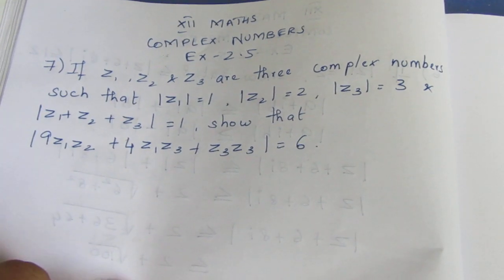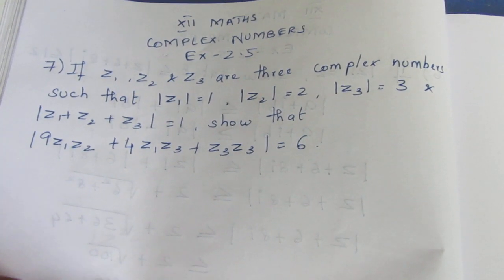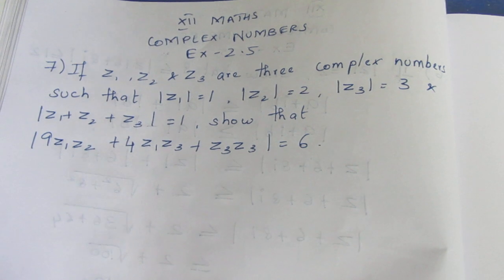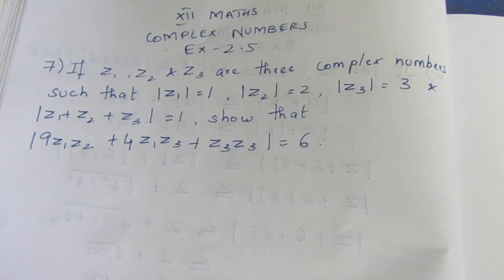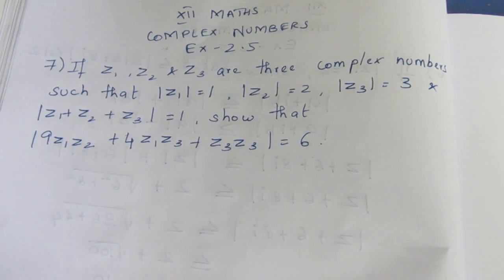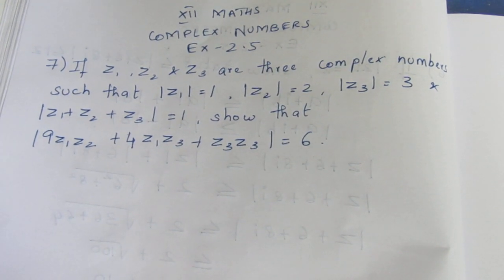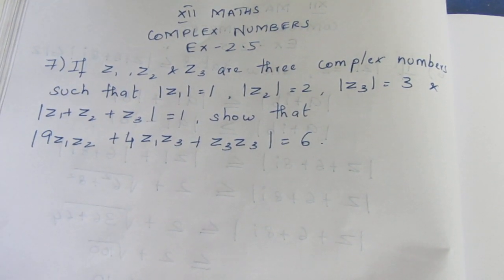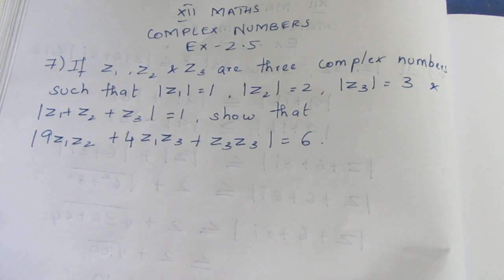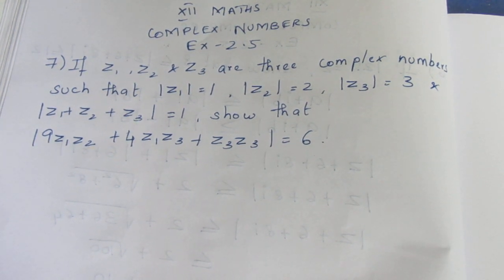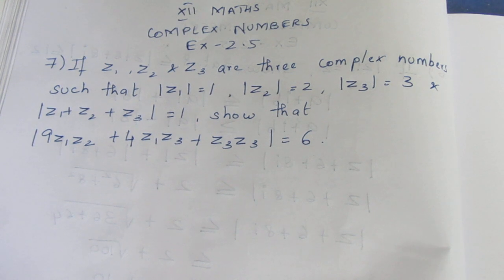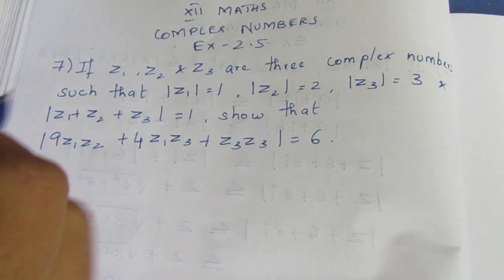If Z1, Z2, Z3 are the 3 complex numbers such that modulus Z1 equal to 1, modulus Z2 equal to 2, modulus Z3 equal to 3. And modulus of Z1 plus Z2 plus Z3 equal to 1.